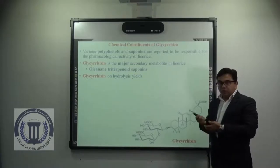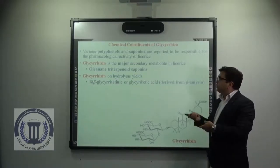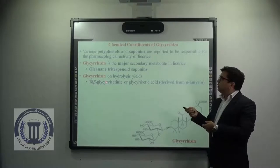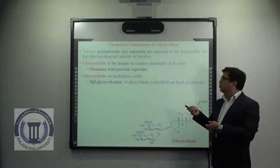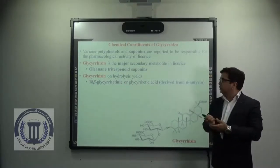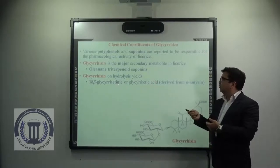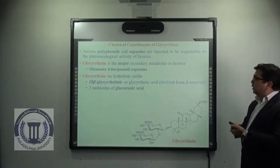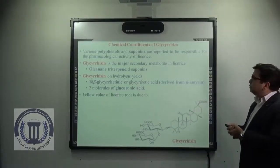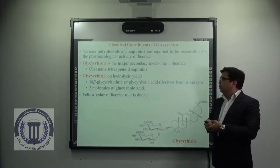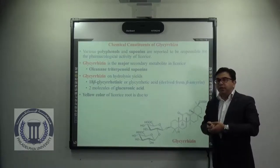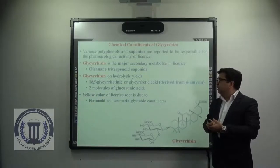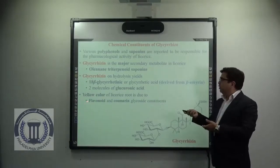Glycyrrhizin on hydrolysis gives 18-beta-glycyrrhetinic acid, also known as glycyrrhetic acid, which is the aglycone part of glycyrrhizin, derived from beta-amyrin, and two molecules of glucuronic acid. The root of Glycyrrhiza looks yellow in color, and that yellow color is due to the presence of flavonoid and coumarin glycoside constituents.